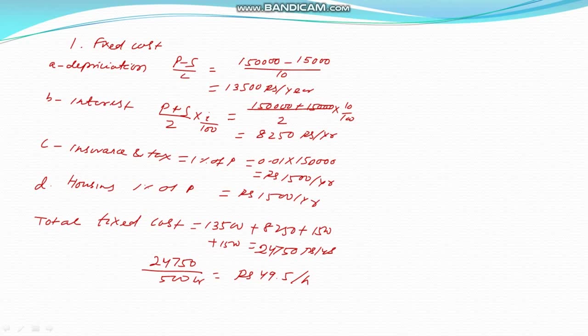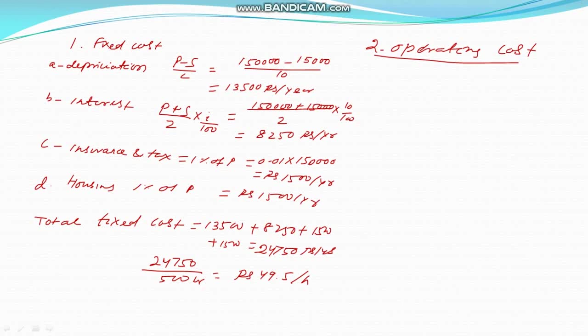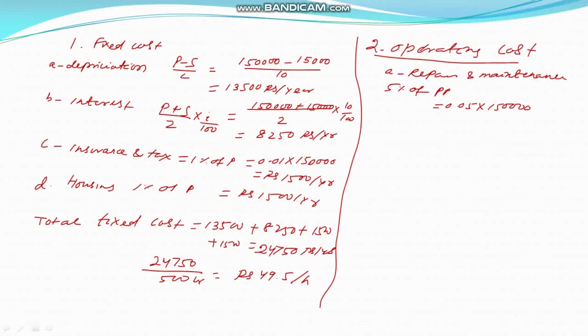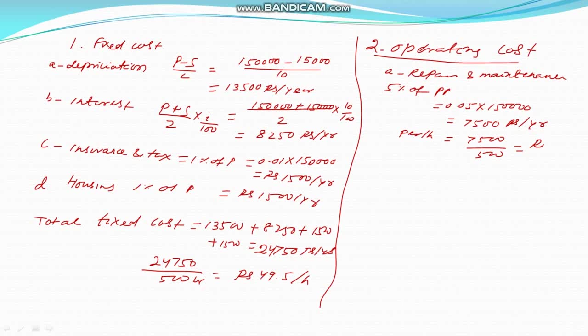Coming to operating cost. Repair and maintenance: taking 5% of purchase price, that is 0.05 multiplied by 1,50,000 equals 7,500 rupees per year. Per hour: 7,500 divided by 500 equals 15 rupees per hour.